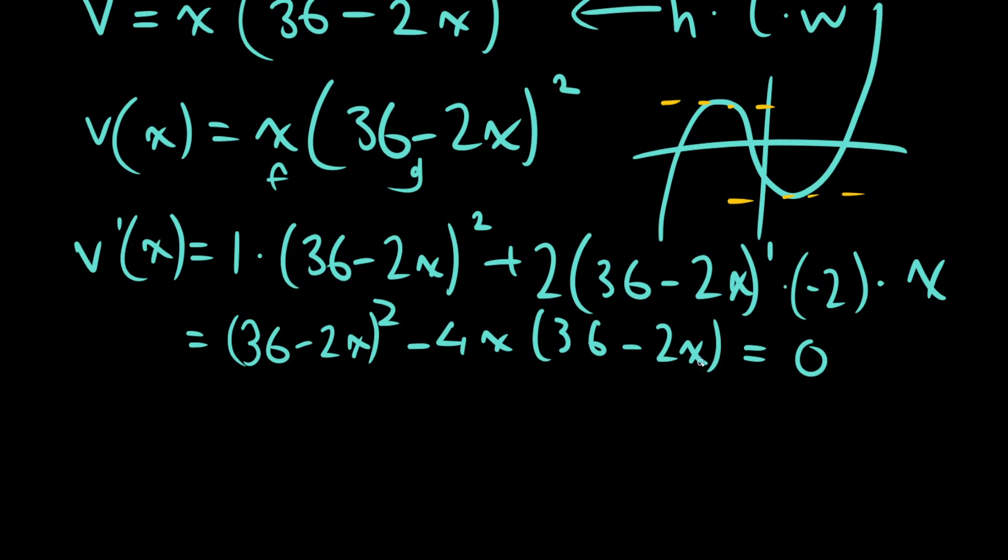You could expand all of this out and refactor it, but I find that to be silly. What we're going to do here is we're going to recognize that there is a common term, and we're going to factor it out from both of them. 36 minus 2x times 36 minus 2x minus 4x is going to be equal to zero.